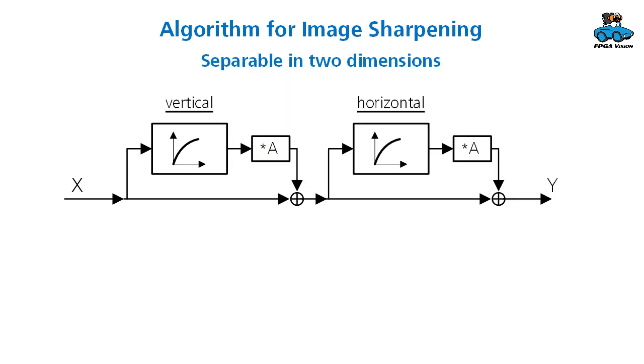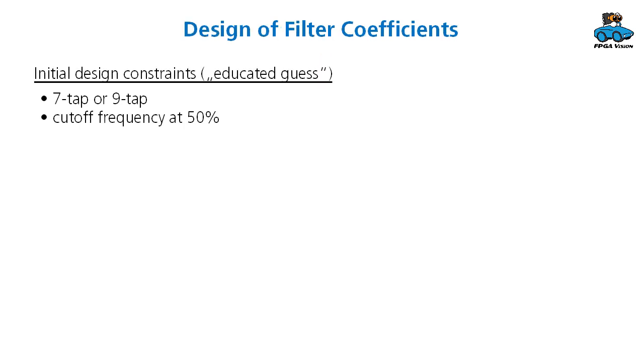An image has two dimensions and you can use a separable filter. So first perform vertical sharpening and then horizontal sharpening. For the high pass filter, we need filter constraints. Therefore we have to think about the size of the filter. You can do experiments with different filter sizes and different filter frequencies. As an initial constraint, as an educated guess, we are designing a seven tap or nine tap filter. This is a medium size and we choose the cutoff frequency at 50% of the frequency range.